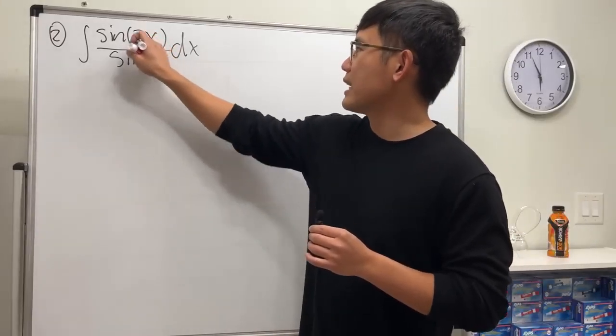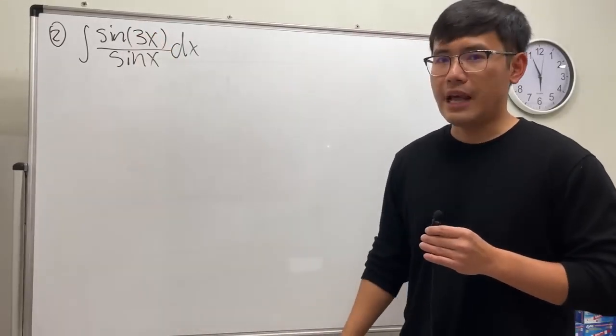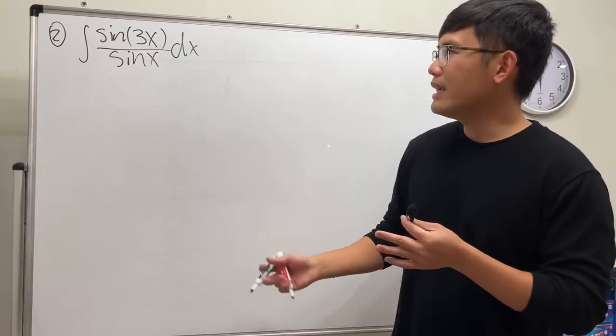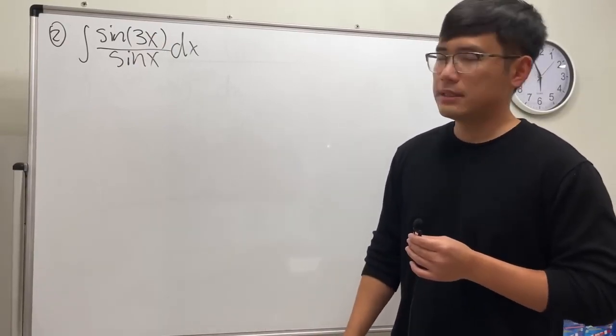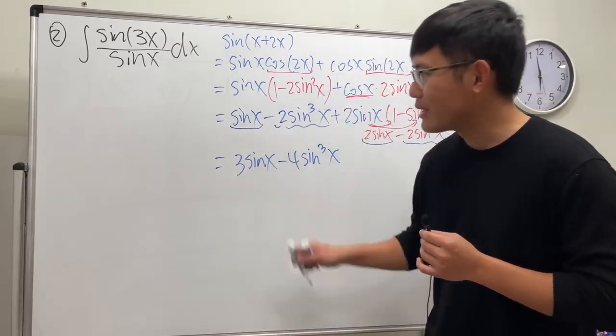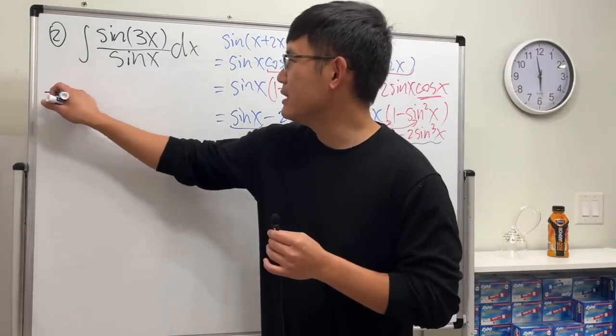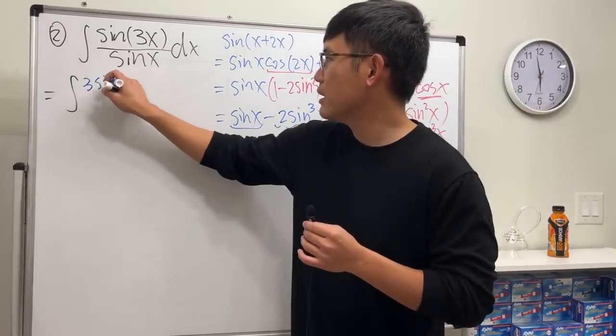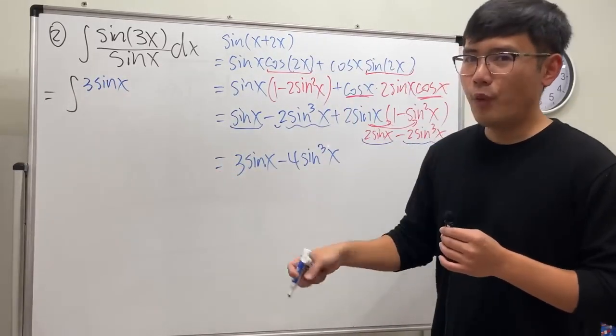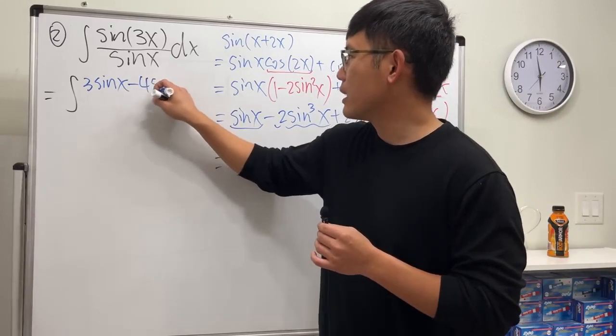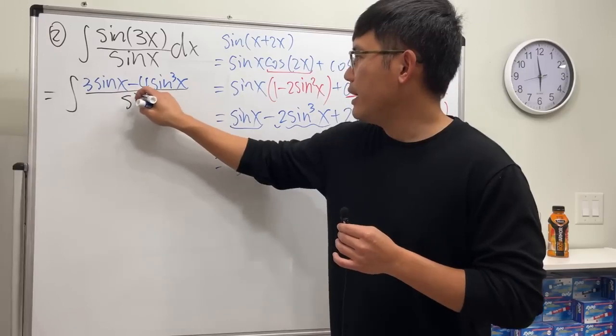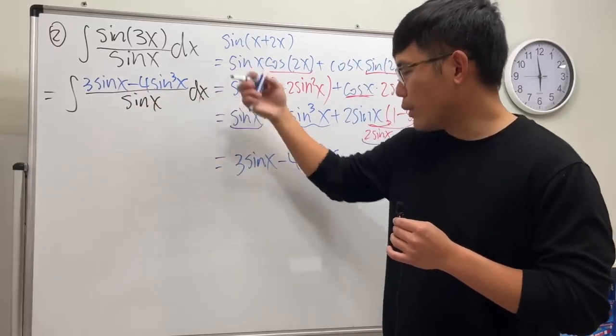So for this one, let's do sine of 3x over sine x. Now the question is, what's the triple angle identity for sine? We can go back to here and use this, and we can see that this is the integral and then we have 3 sine x minus 4 sine to the third power x, and then of course all divided by sine x.